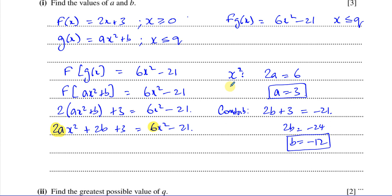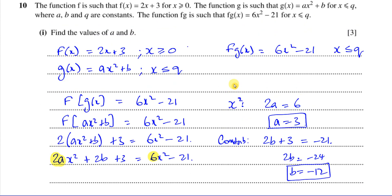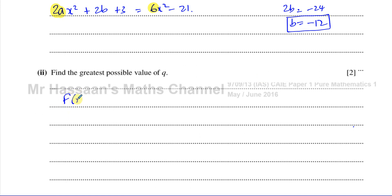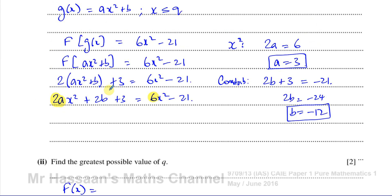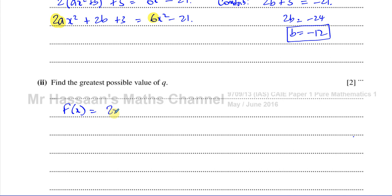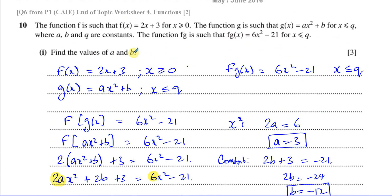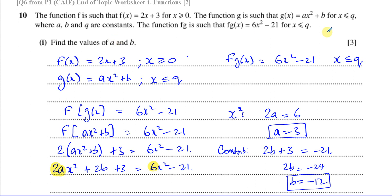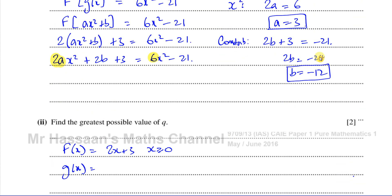Next, it says find the greatest possible value of q. We have f(x) = 2x + 3 for x ≥ 0. Now that we know a and b, g(x) = 3x² − 12 for x ≤ q. And fg(x) = 6x² − 21 for x ≤ q.